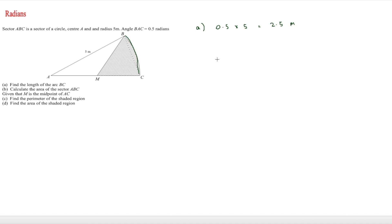Part b asks us to calculate the area of sector ABC. Using half r squared theta, that's half times 5 squared times 0.5, which gives a final answer of 25 over 4 metres squared.